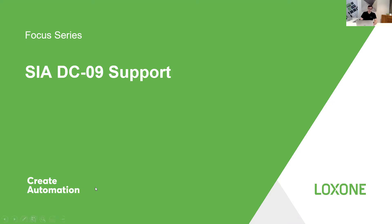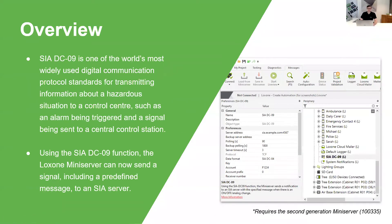What is SIA? What does it mean? What's it used for? SIA DC09 is one of the world's most widely used digital communication protocol standards for transmitting information about a hazardous situation to a control center - such as an alarm being triggered and a signal being sent to a central control station. Using the SIA DC09 function, the Loxone miniserver can now send a signal including a predefined message to a SIA server.